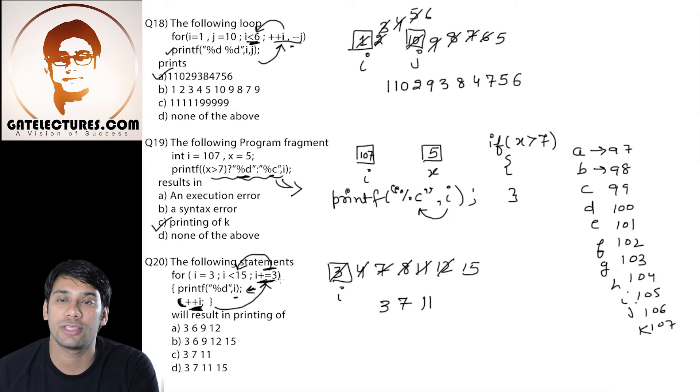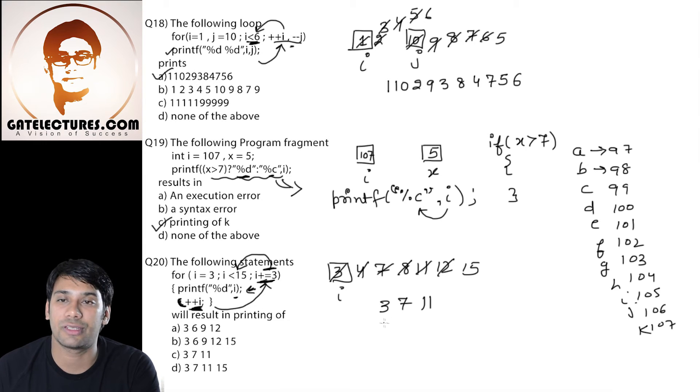Now 15 is not less than 15. Therefore it will come out of this loop. So it will print the output as 3, 7 and 11. So option number C is correct.